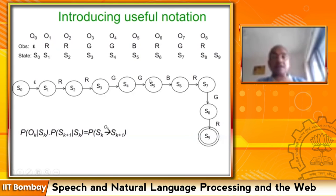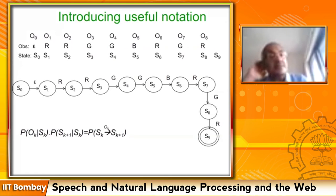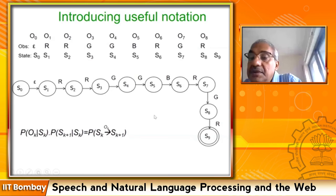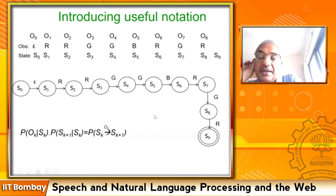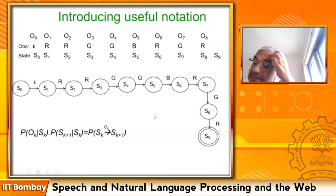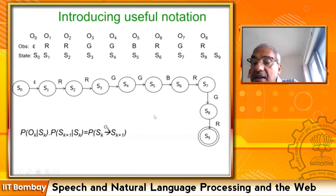We will continue looking deeply into the functioning of the hidden Markov model to cement our understanding of sequence labeling and decoding. From the Q&A: Mohit notes that HMM should be defined as a tuple, not a set — correct, it should be a tuple. Another question: how do we decide an inherent role for a word if it changes with context? The inherent role here refers to the part of speech tag.